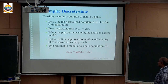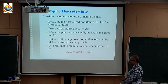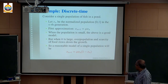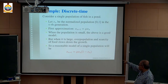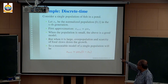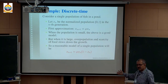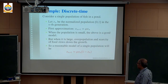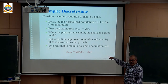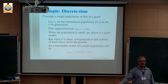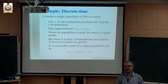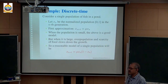So you have this as a reasonably plausible model. When x_n is large, (1 - x_n) will be close to zero and therefore the whole thing will go down. This model is called the logistic map and we will have a lot to do with it when we deal with maps.